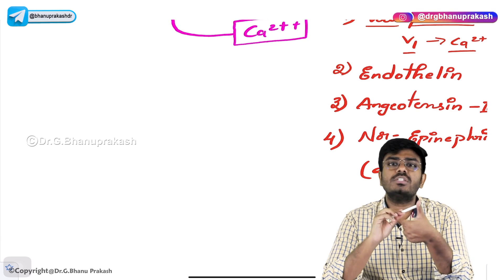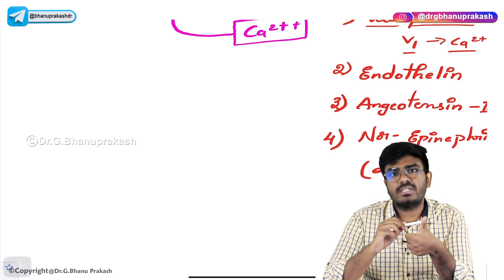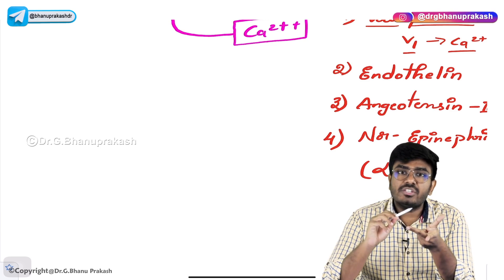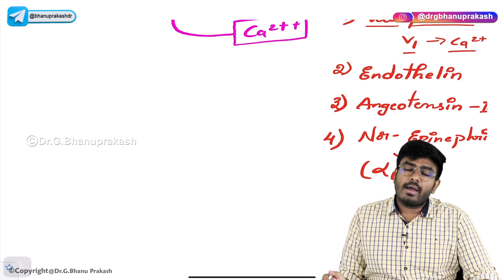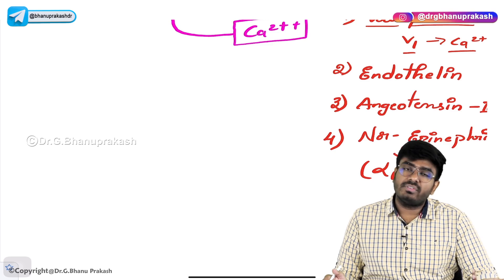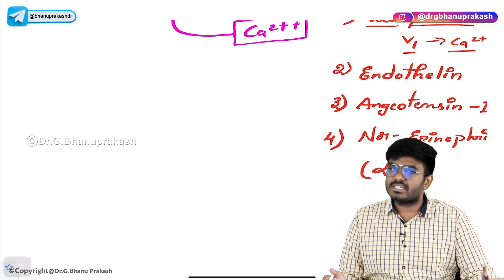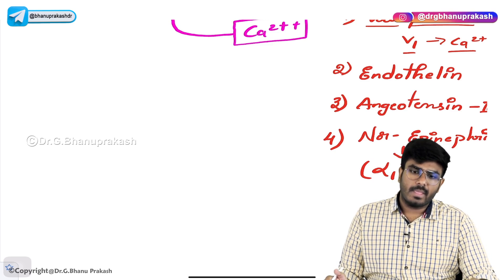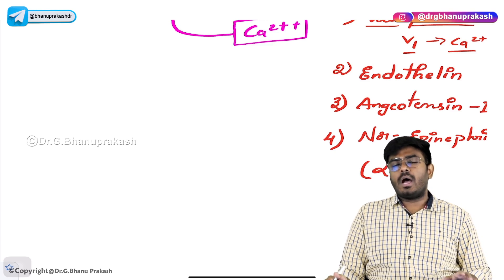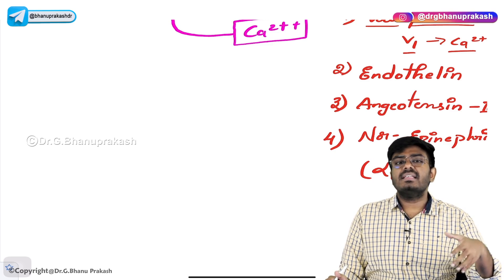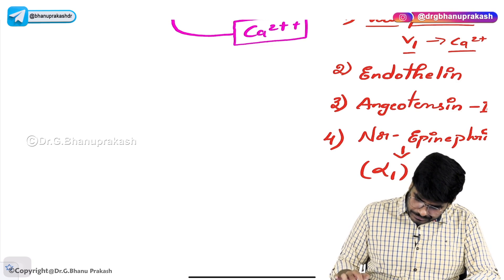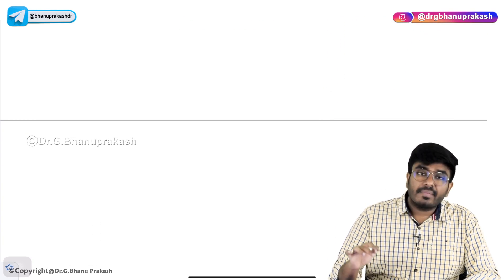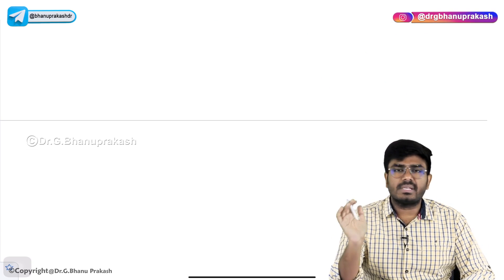Just remember what they are: oxytocin uses calcium as a secondary messenger. Endothelin, angiotensin II, norepinephrine, and vasopressin by acting on V1 receptors also use calcium as a secondary messenger. We have discussed calcium as a secondary messenger. Now after this, let's see the other types of cell surface receptors.